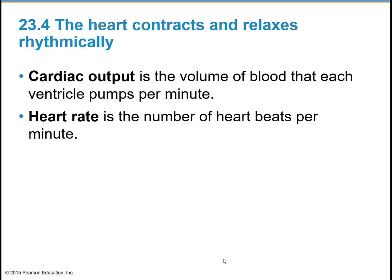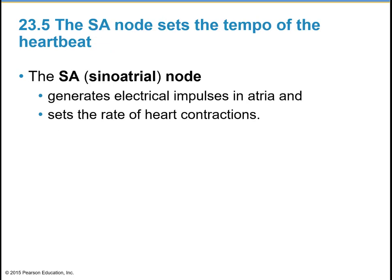Cardiac output is the volume of blood pumped out of each ventricle per minute. Heart rate is the number of heartbeats per minute, also known as the pulse. The SA node, or sinoatrial node, is also known as the heart's pacemaker. It generates electrical impulses in the atria and sets the rate of your heartbeats or contractions.